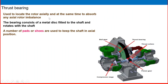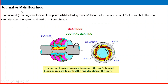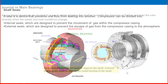The thrust bearing locates the rotor axially and absorbs any axial rotor imbalance. It consists of a metallic disc fitted to the shaft that rotates with the shaft; a number of pads or shoes keep the shaft in the axial position. General bearings are located to support the shaft whilst allowing it to turn with minimum friction, and they hold the rotor centrally when speed and load conditions change. Two general bearings support the shaft and control its radial motion.